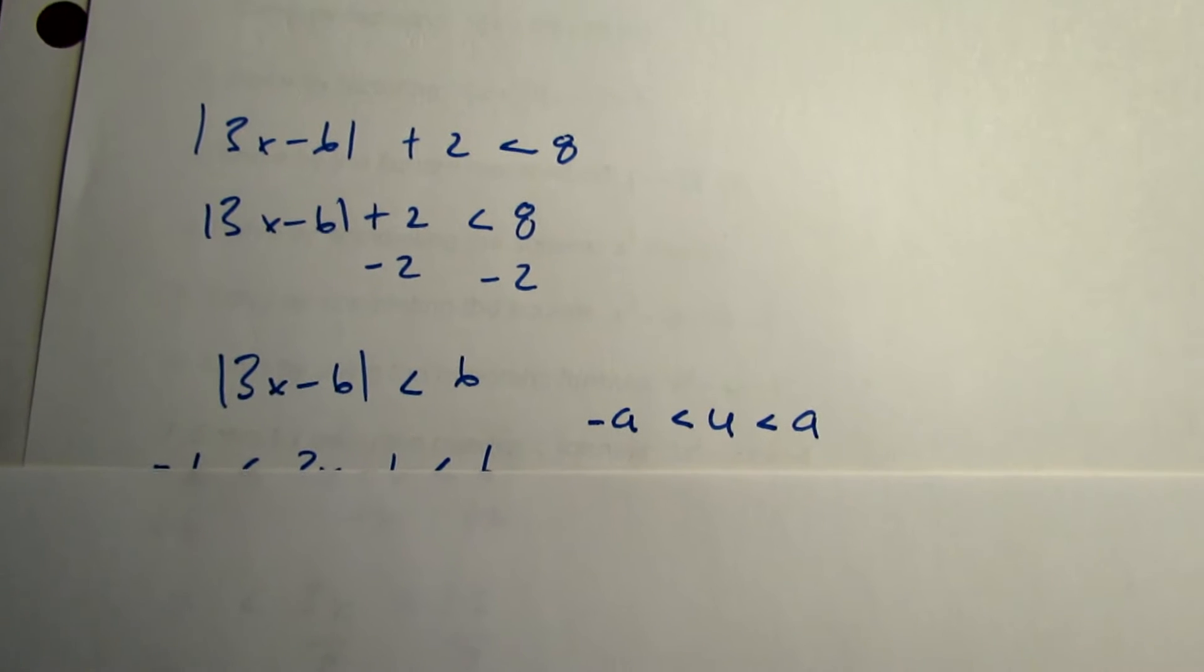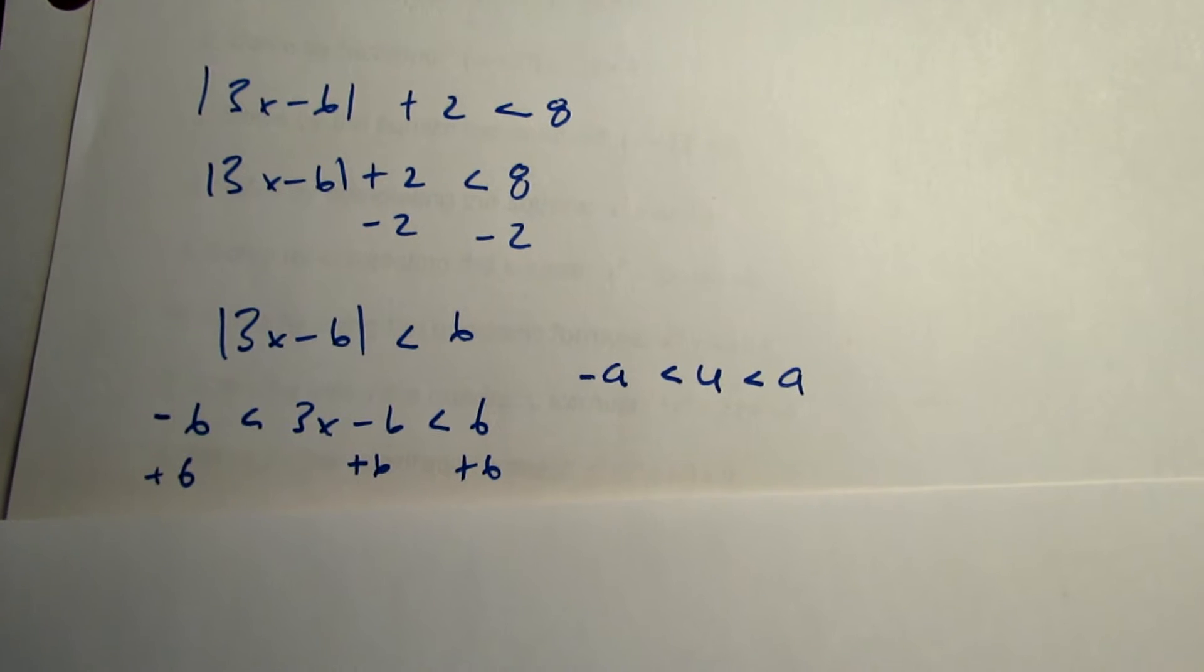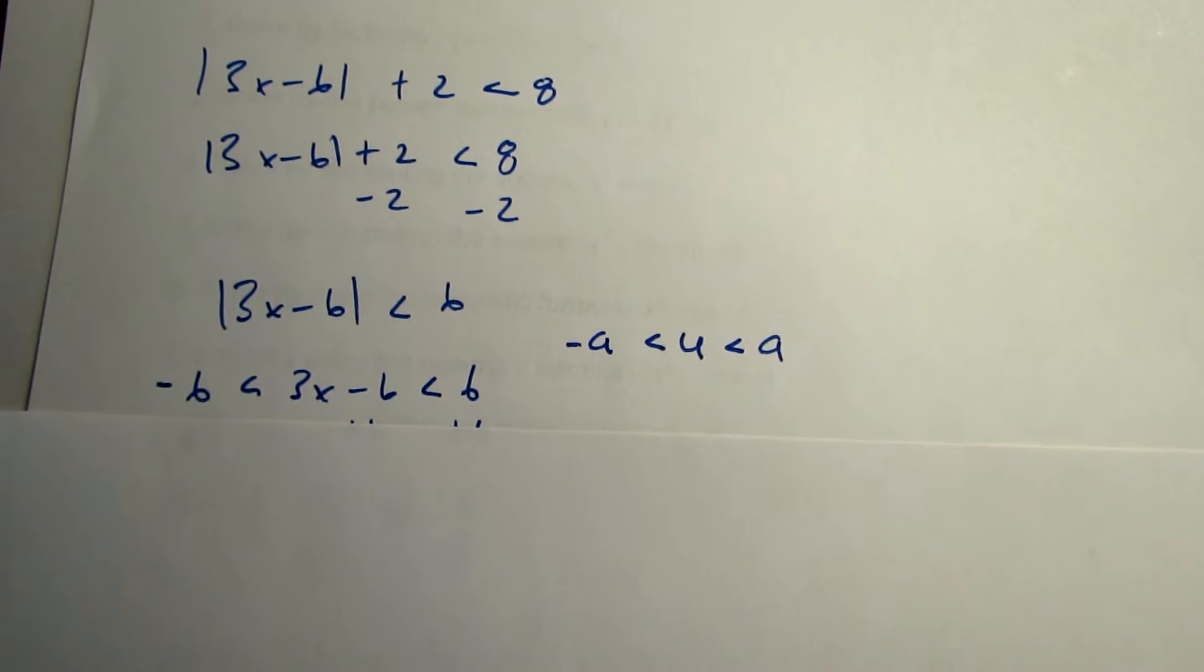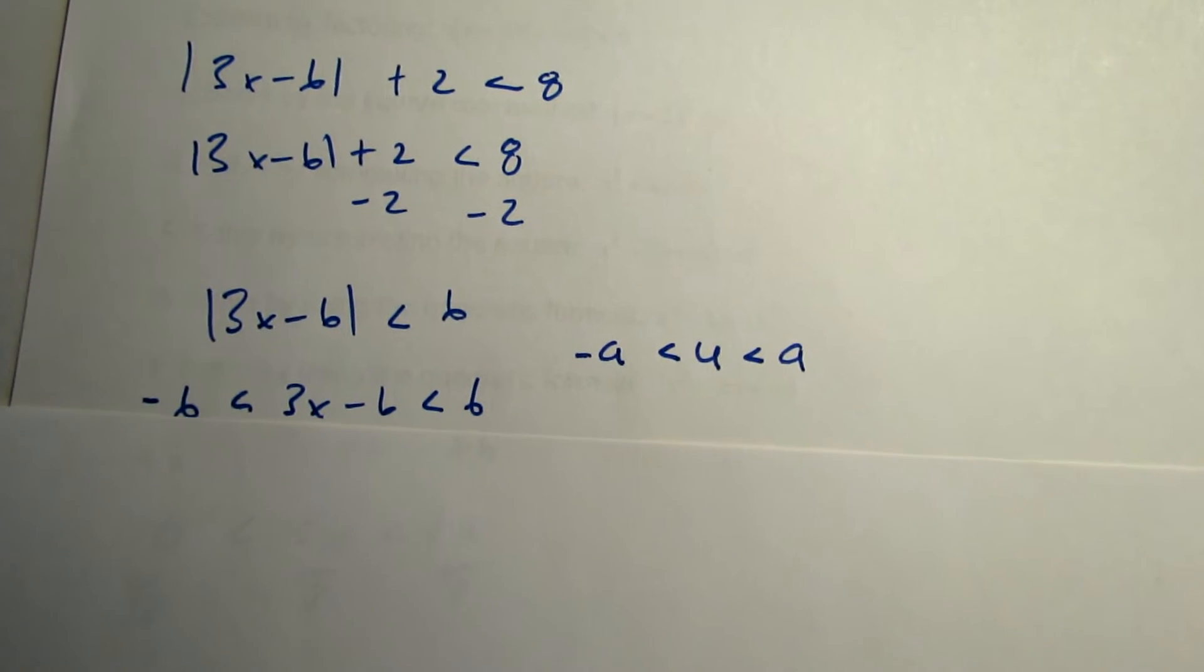If a is a positive number, and if u is an algebraic expression, then absolute value of u less than a is equivalent to the theorem negative a less than u less than a.